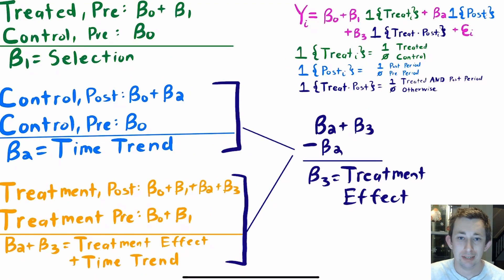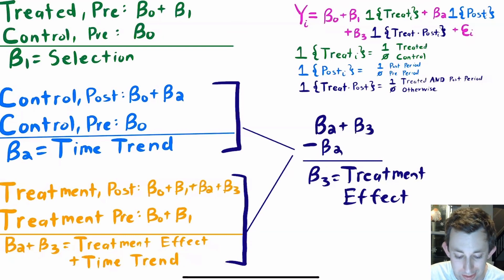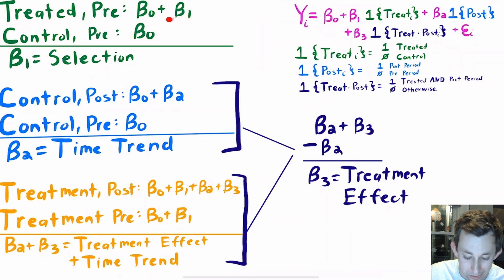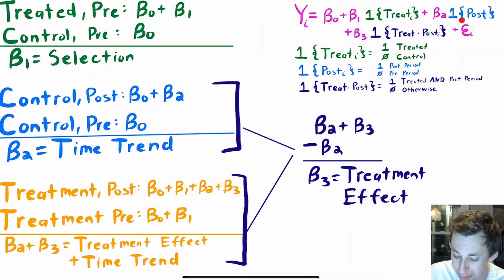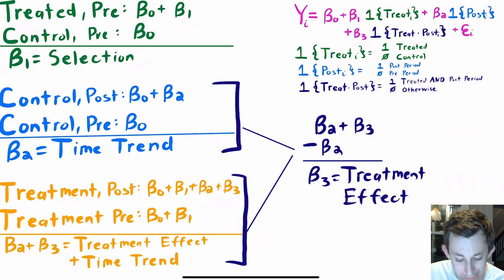Let's talk about what each of those betas means by taking some differences. For beta-one: consider the treated group in the pre-period — treatment is one, post is zero, treatment-times-post is zero — so you get beta-zero plus beta-one. For the control group in the pre-period, you just get beta-zero. The difference between treatment and control in the pre-period gives beta-one, which represents the selection bias between the control and treatment groups. I'll show a graph on the next slide which will make this much clearer, but for now understand that beta-one represents selection.